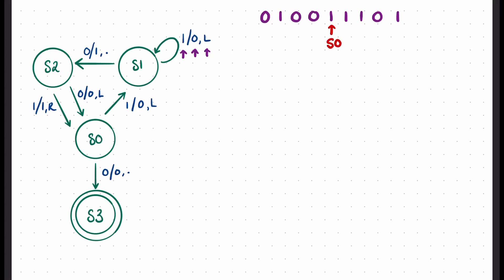We have the example tape: 0 1 0 0 1 1 1 0 1, and the tape head is starting in state 0 pointing at that 1. Looking at state 0, because we're reading a 1, we write a 0 and move to the left. We fill in all the other data and move the tape head one place to the left, entering state 1. In state 1 we're pointing at a 0, and the rule says we write a 1. The dot in the rule indicates the tape head is not going to move, so we write a 1 there.